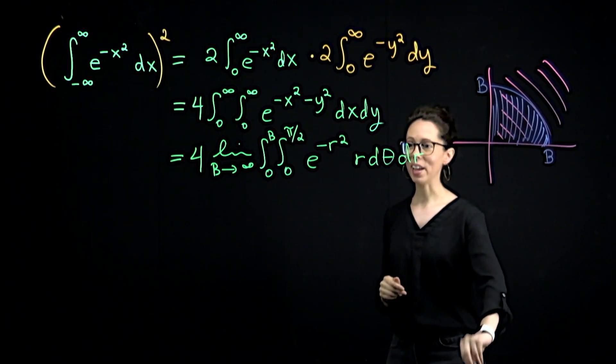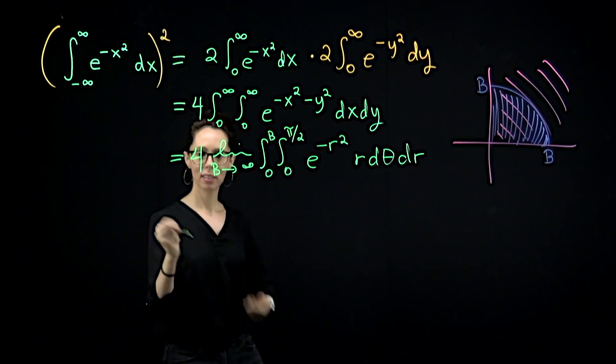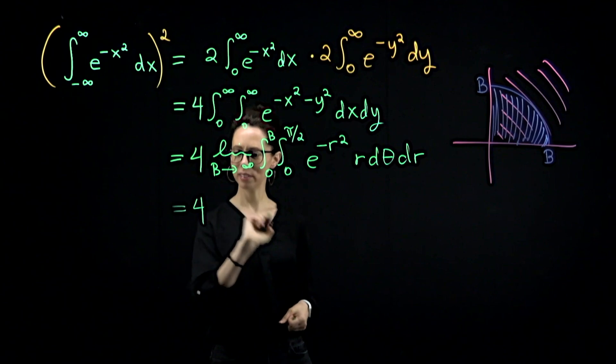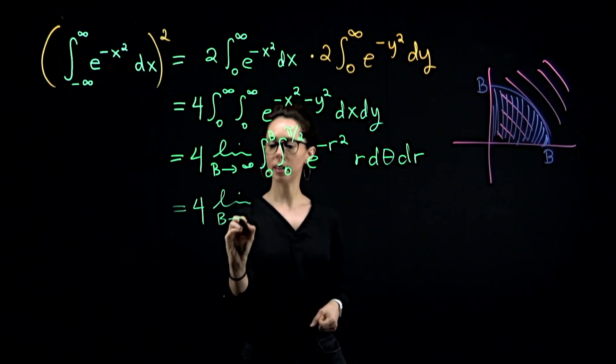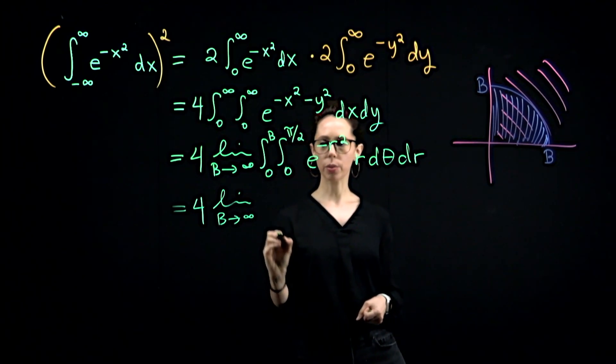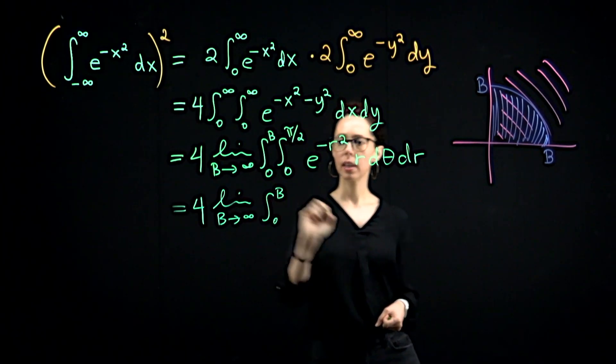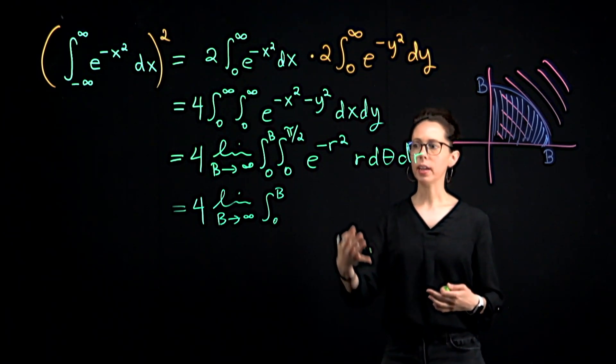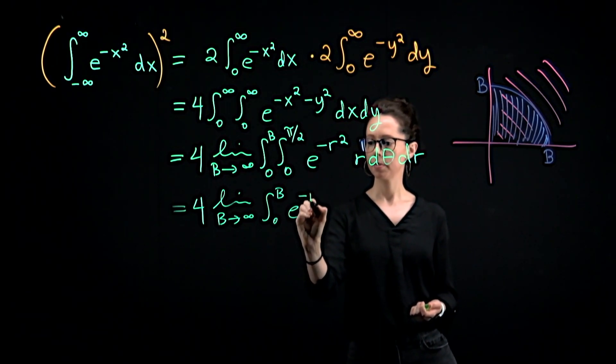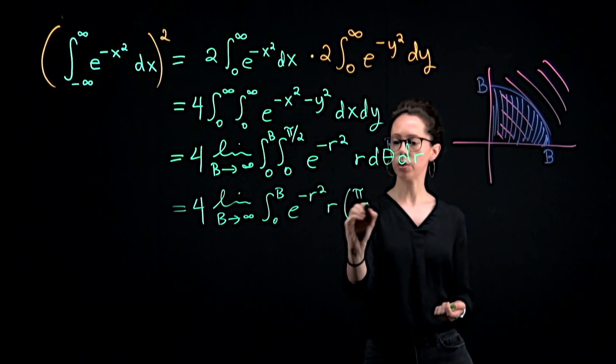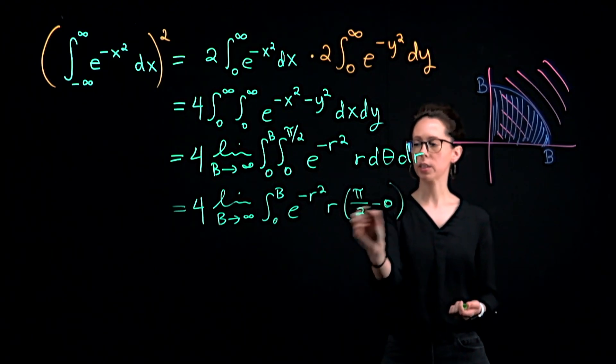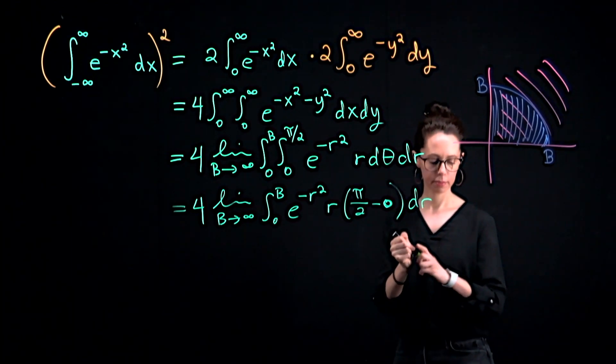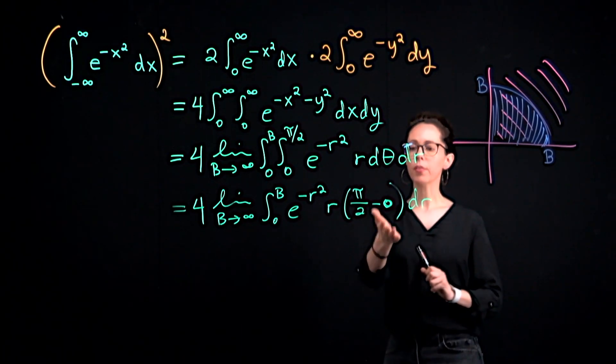This double integral you can probably handle right now. If you'd like to, you could pause and work through it. So we'll have four limit as B grows to infinity. Let's go ahead and do the anti-differentiation with respect to theta. There is no theta term here. So it's like, imagine this times the number one, anti-differentiate one to theta, plug in pi over two minus zero. All that to say is that we'll have pi over two minus zero. This expression comes out of the anti-differentiation with respect to theta. And then we still have dr. The pi over two we'll pull out front. That's just a number.